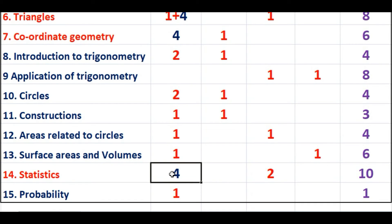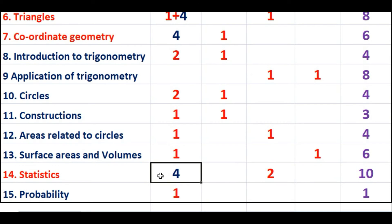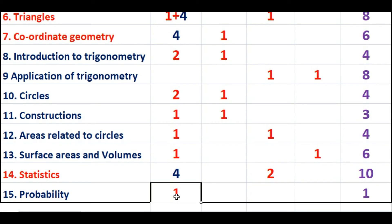From the chapter Statistics, one case study question will be asked along with two questions of three marks. The case study question has five sub-parts each carrying one mark, and you need to attempt four of them. So four plus six gives ten marks from Statistics. From the chapter Probability, only one question of one mark has been given in the sample paper.